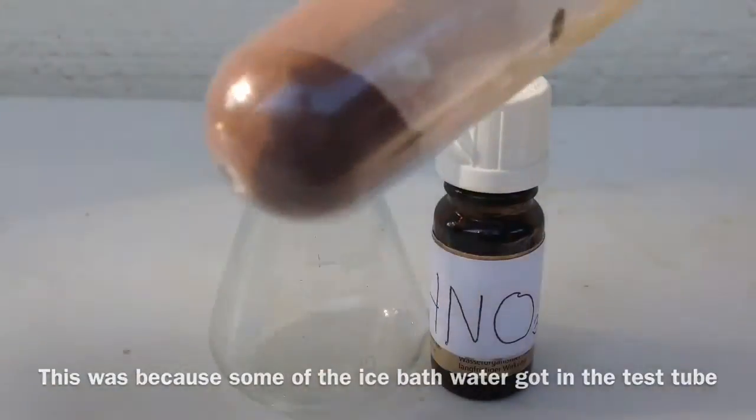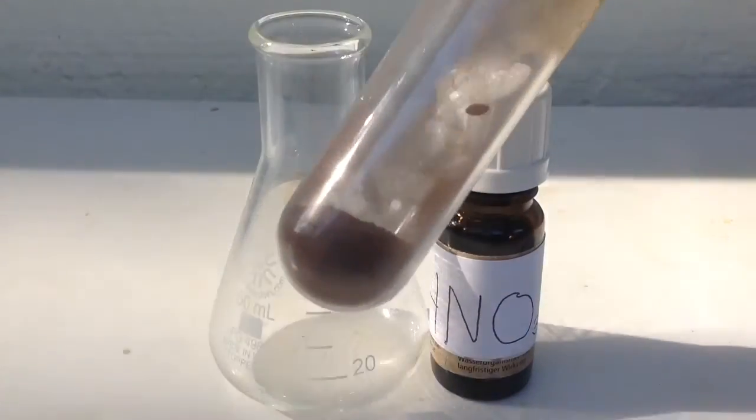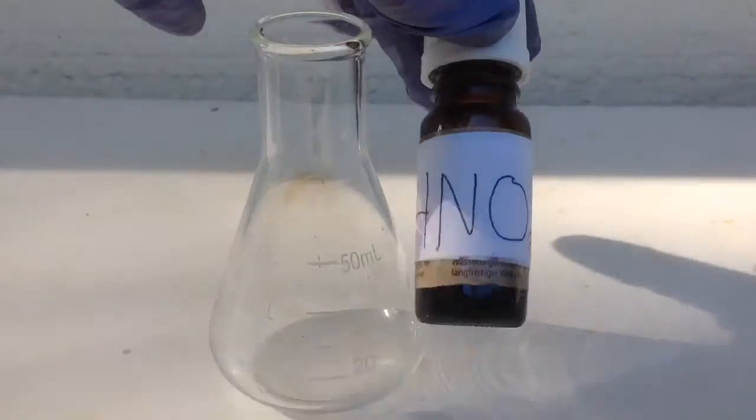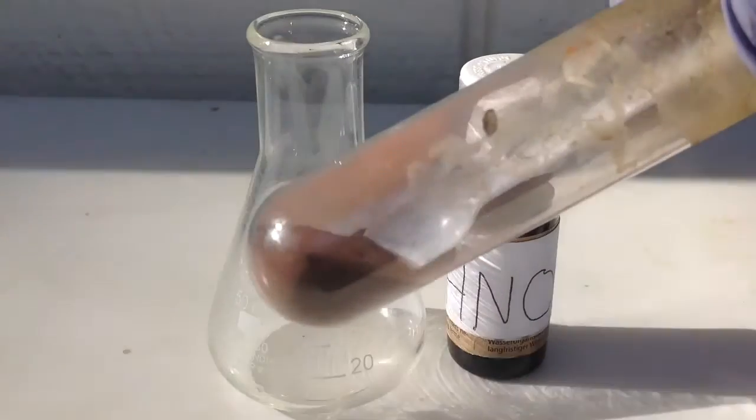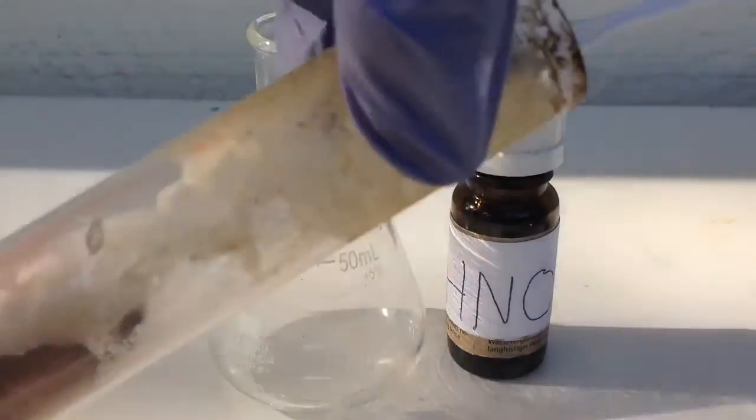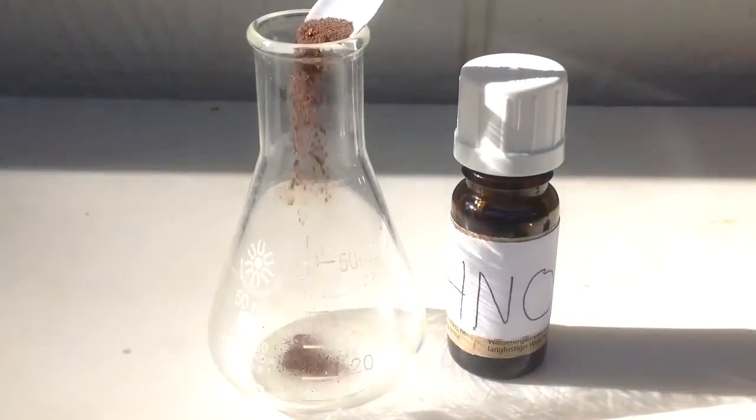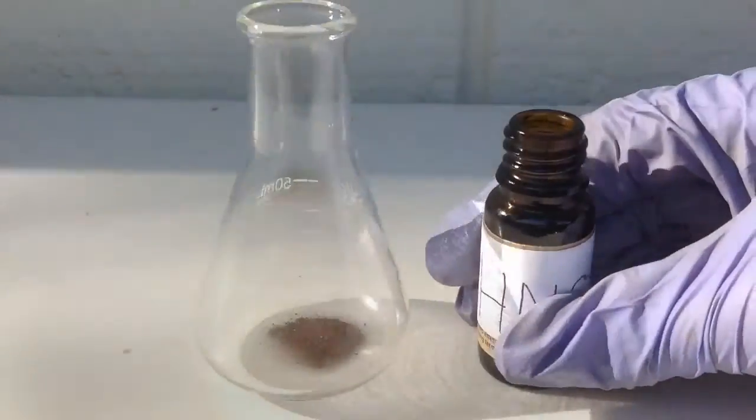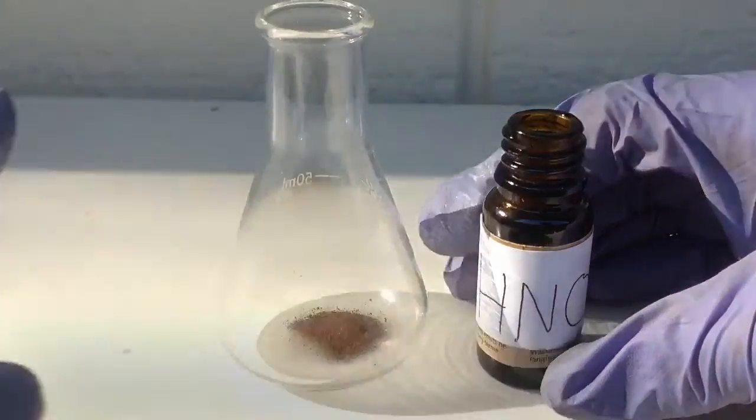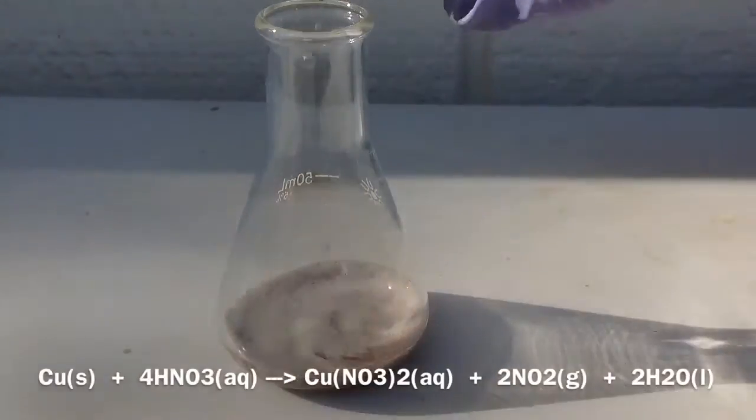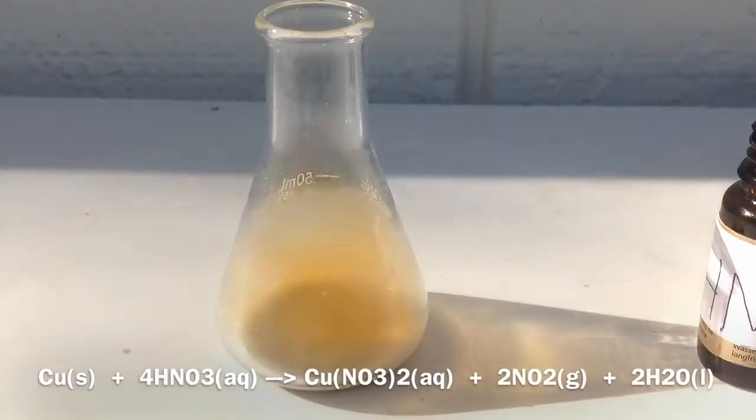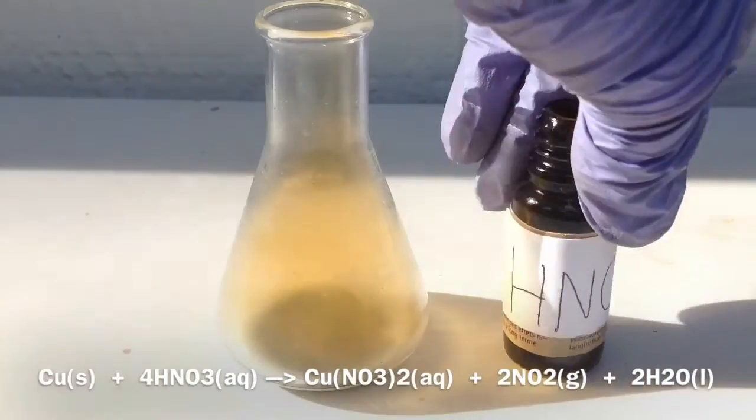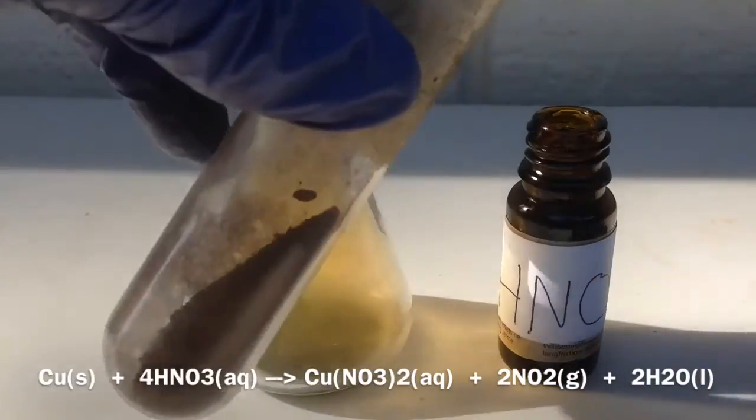Here we're going to test the reactivity of my nitric acid that I made with some copper powder. This isn't all of it, this is only like 15 milliliters of it. As you can see, the nitrogen dioxide gas evolved through the reaction of nitric acid and copper powder.